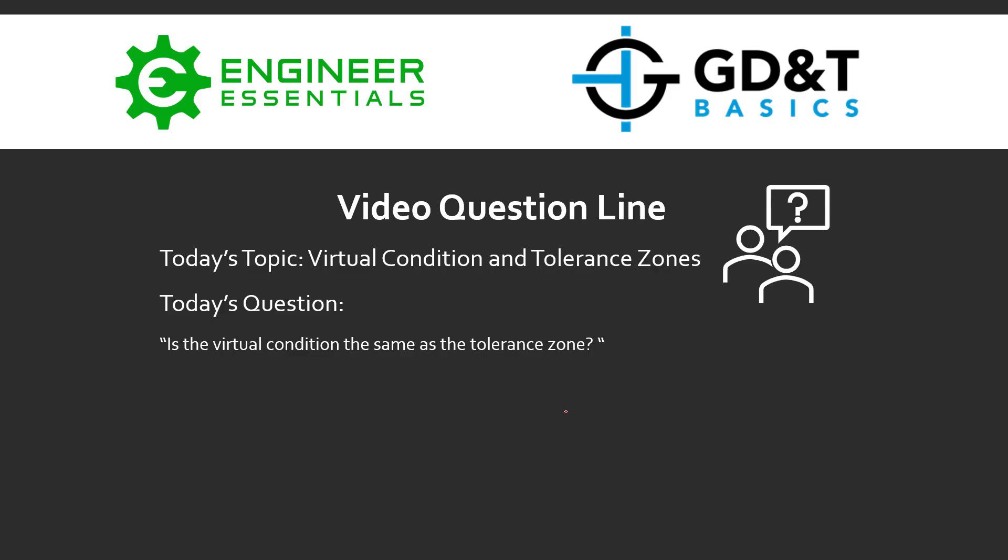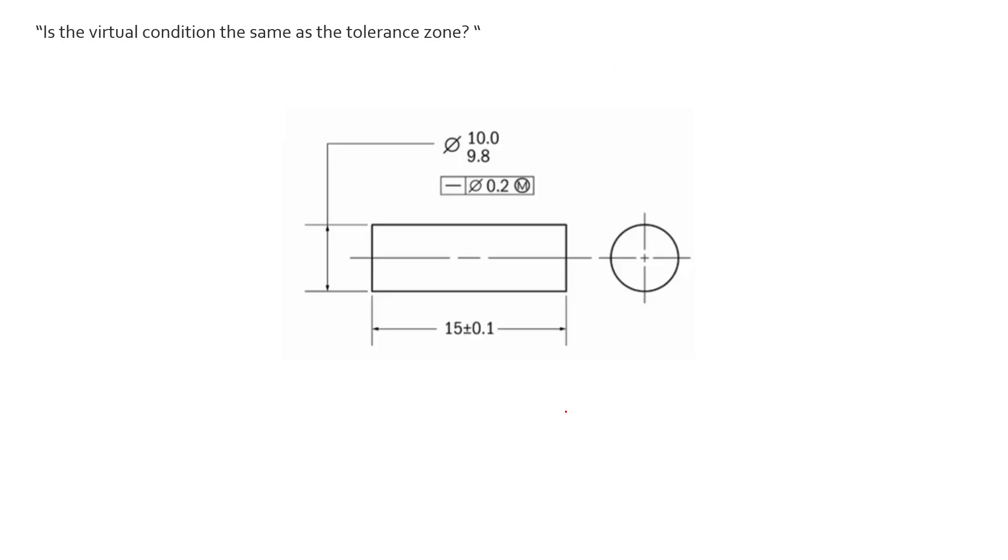Hey everybody, Jason here with GD&T Basics. Today on the video question line, we're covering a topic from a student's question on virtual condition and tolerance zones. Today's question is: Is the virtual condition the same as the tolerance zone? We have a simple example - in fact, this was the image the question originated from. So is the virtual condition of this feature of size the same as its tolerance zone?